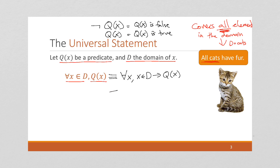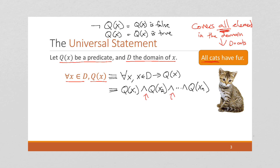Another way of writing this using Boolean logic is to say that Q(x₁) is true and Q(x₂) is true, all the way up to Q(xₙ) is true — that they're all true. This is a conjunction of quantifiers, and we're saying it's true for every element in our domain. This is called the universal statement.